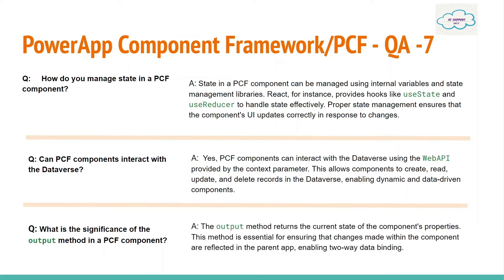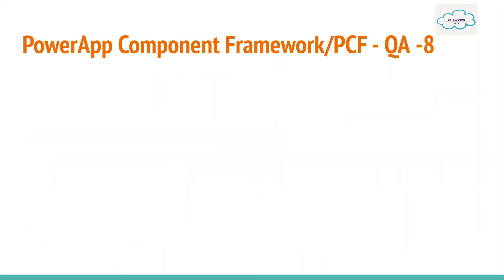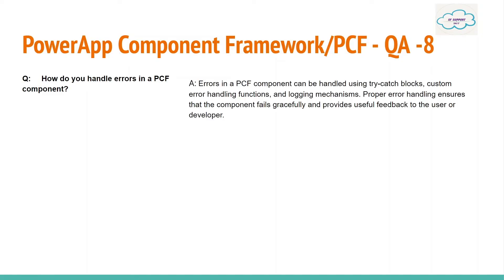The output method returns the current state of the component's properties. This method is essential for ensuring that changes made within the component are reflected in the parent app, enabling two-way data binding. Question: How do you handle errors in a PCF component?